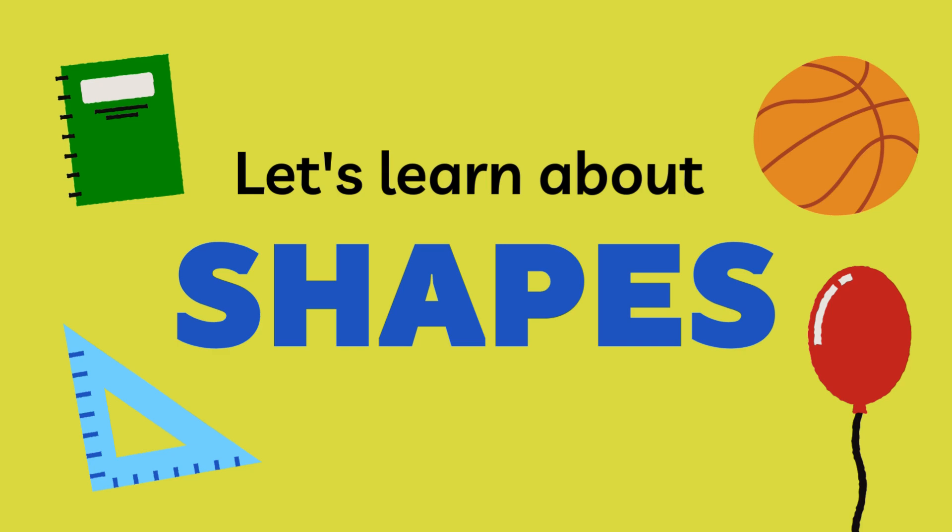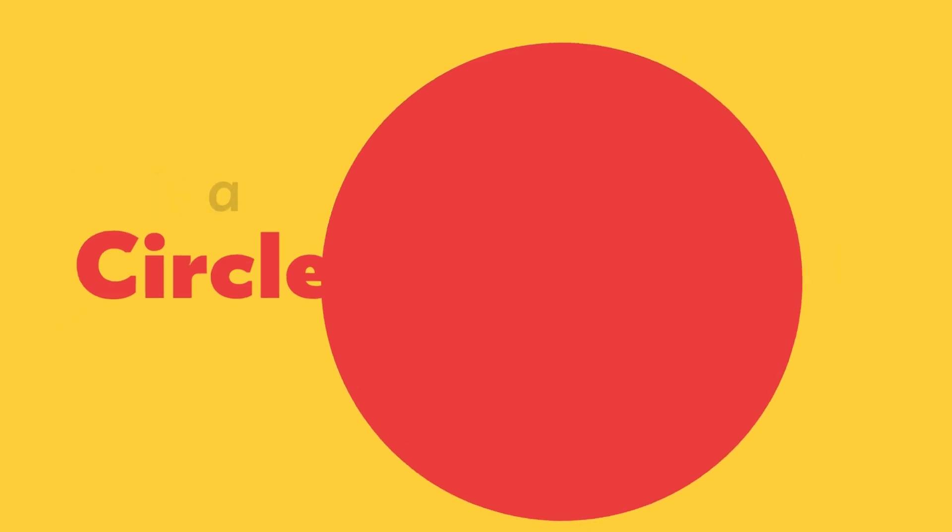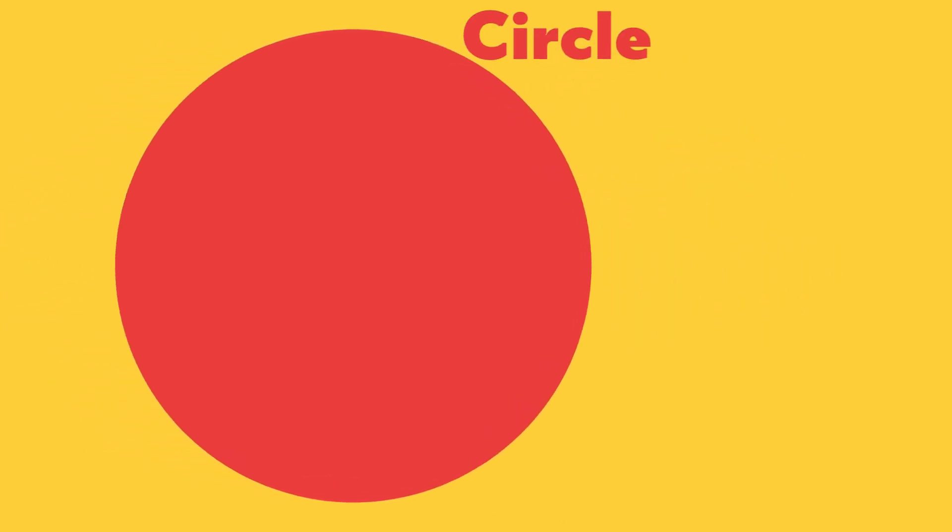Hello kids! Let's learn about shapes. This is a circle. It's round and has no corners or edges. That means it's smooth all the way around.